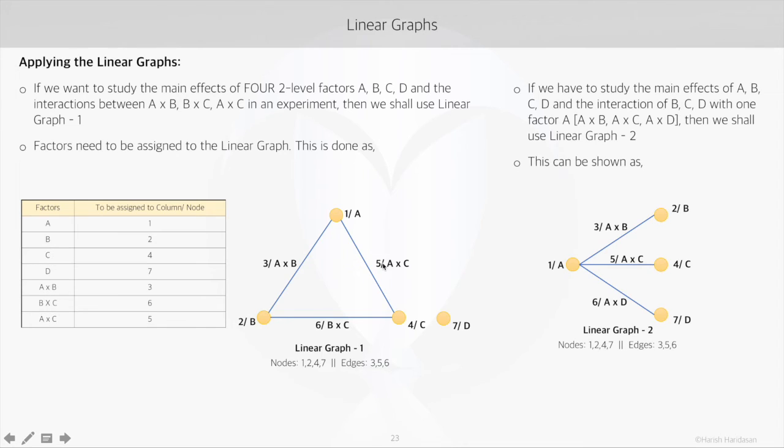But if in the same design, we have to study the main effects of the factors A, B, C, D. But when it comes to the interactions, now we have to study the interaction of the factors B, C and D with one factor, that is A. So basically, we have to study the interactions A, B, A, C and A, D. So in that case, we use the linear graph 2.